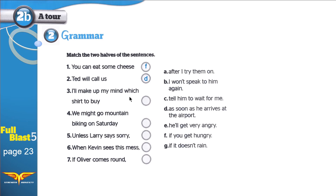Three: I'll make up my mind — means I will decide. I will choose which shirt to buy after I try them on. Try them on means just check them, see if they fit. Four: We might go mountain biking on Saturday — if it doesn't rain, if there is no rain, we will go mountain biking on the mountain. Five: Unless Larry says sorry, I will not speak to him again. We are done. He has to say sorry for me to speak to him again.